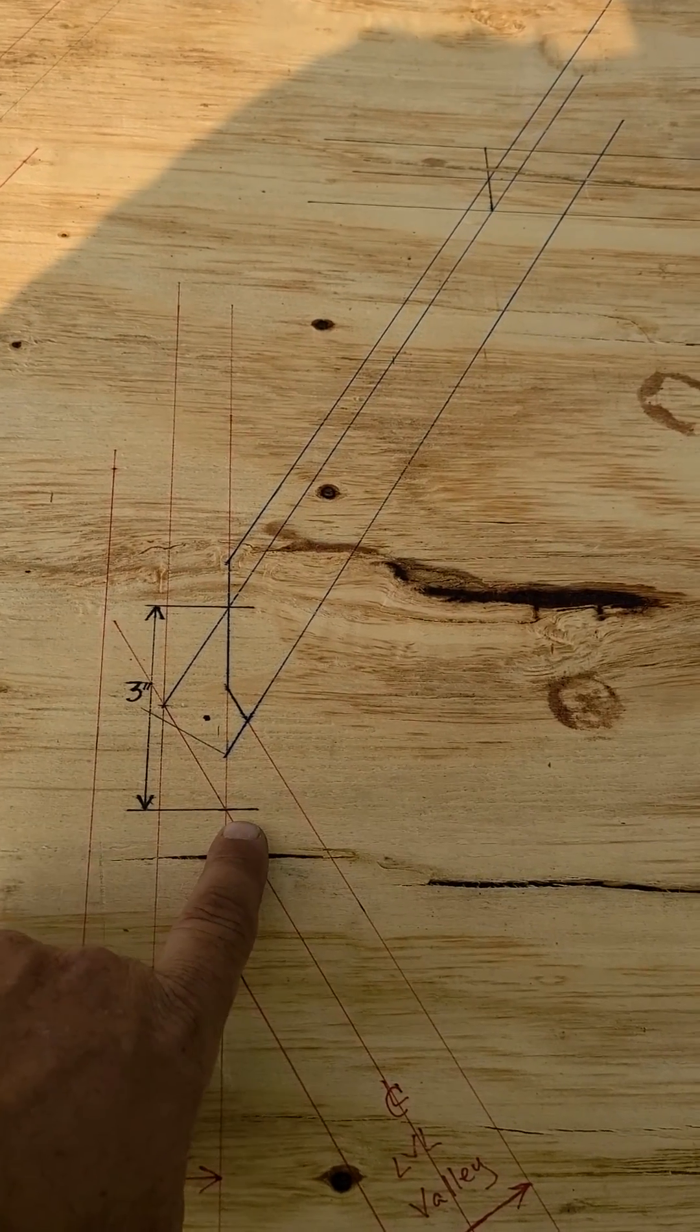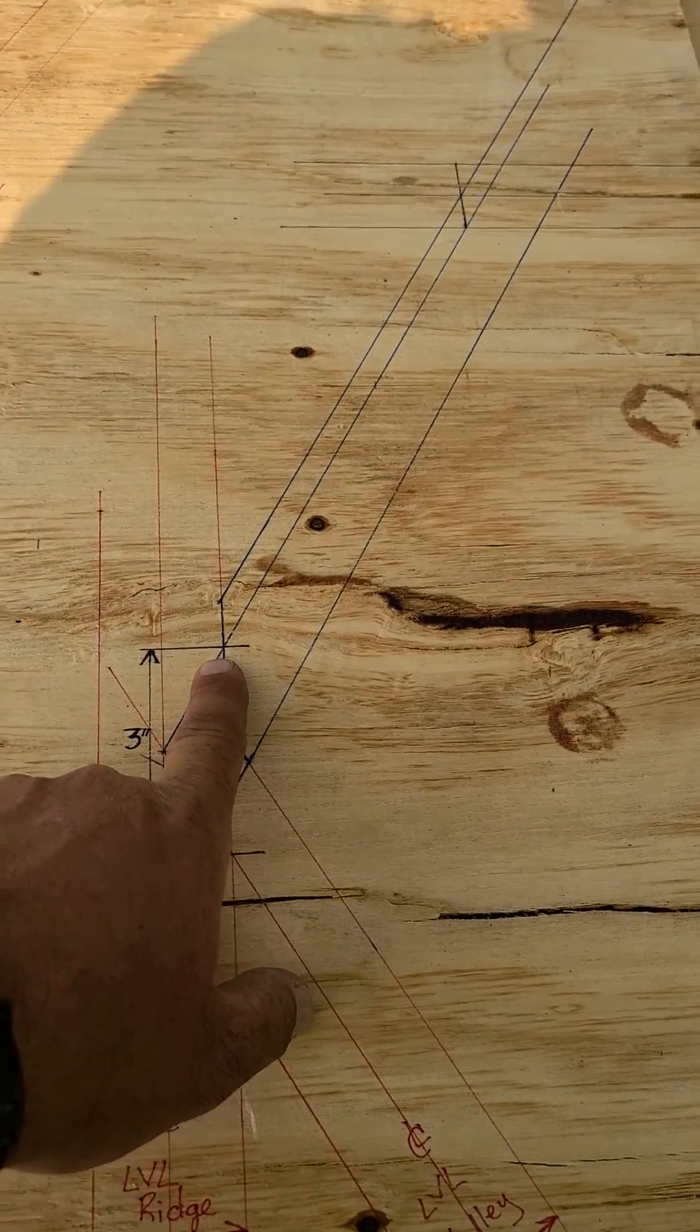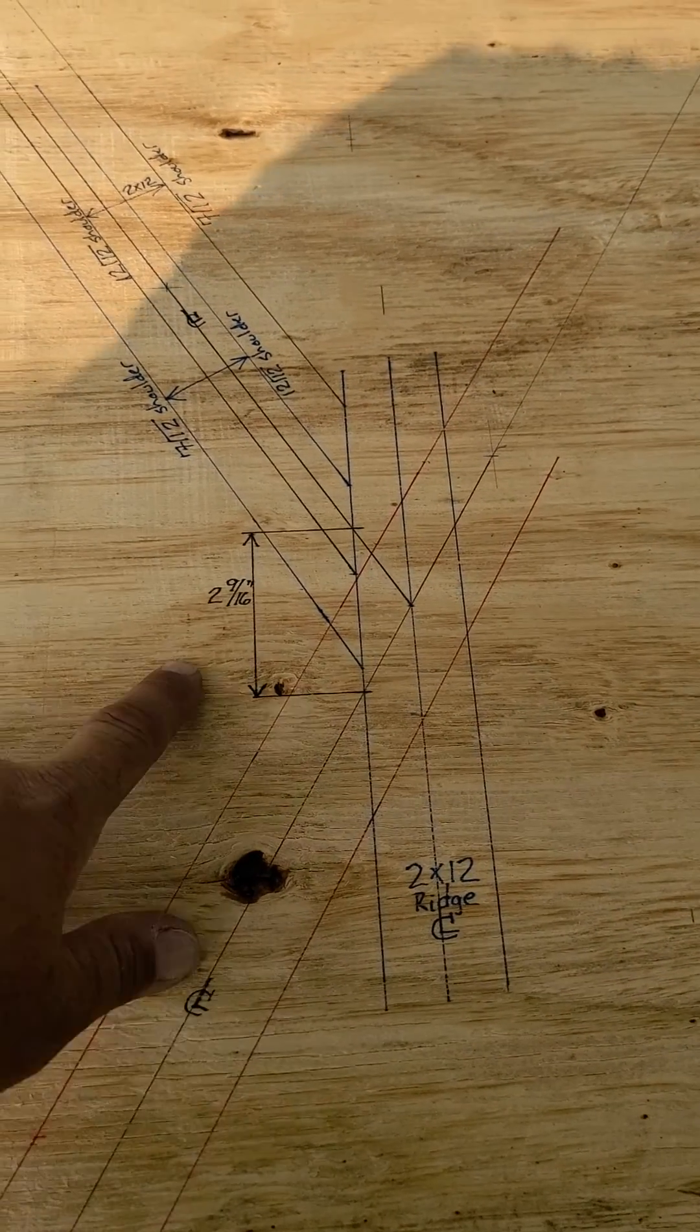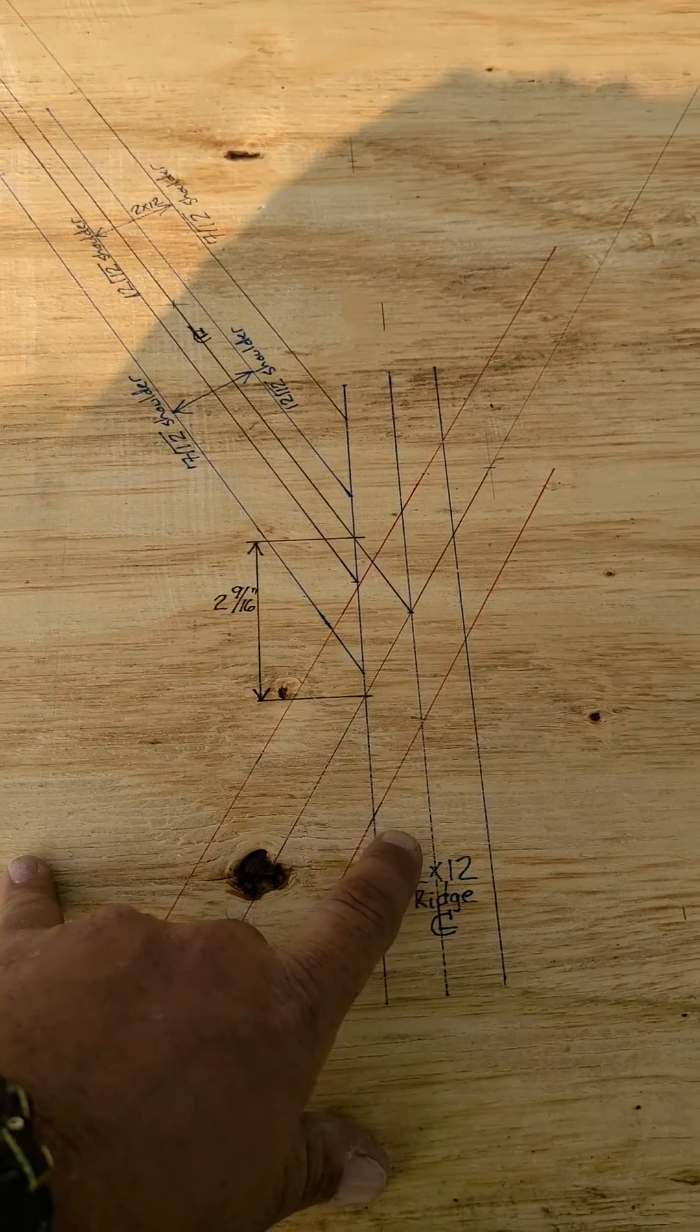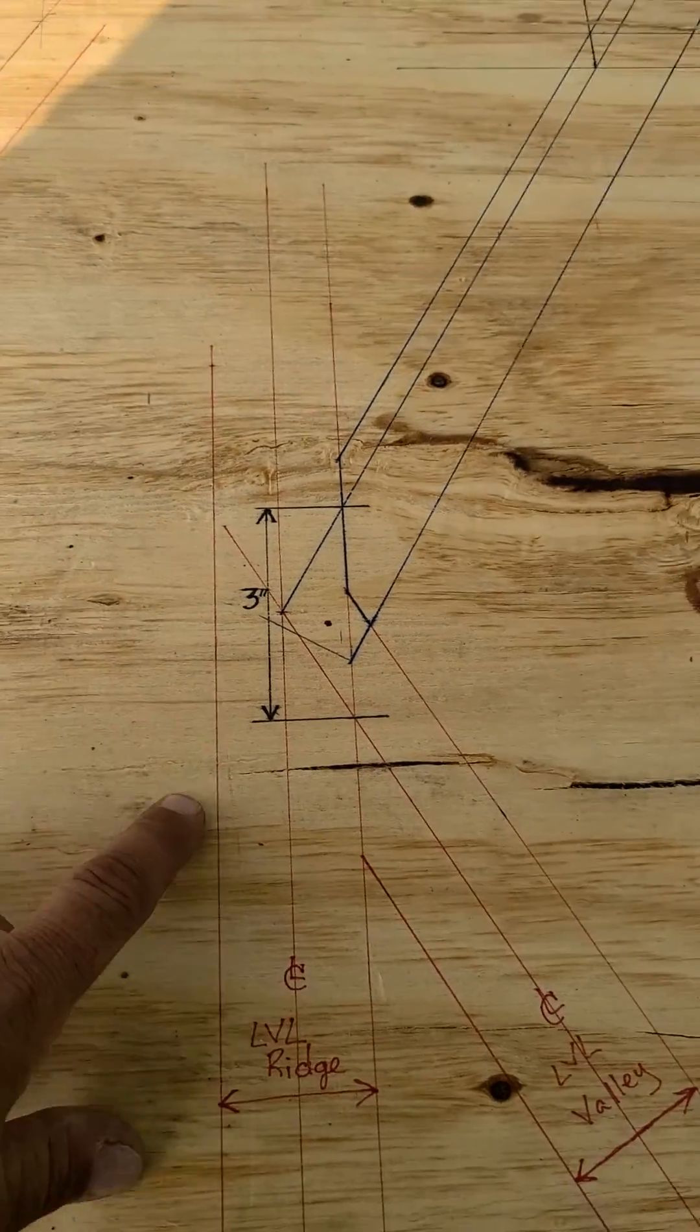Same deduction, center, center. Just like here, the only difference is this is a 2-by-12 ridge versus an LVL.